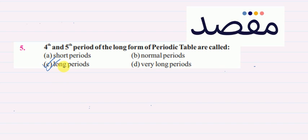called the Long Periods. And why are they called the Long Periods? Because each of them consists of 18 elements.